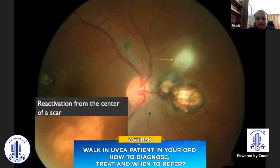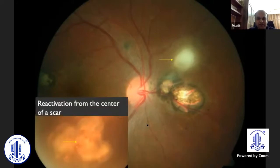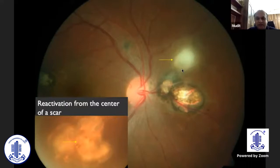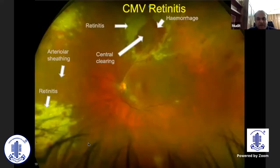One clue to remember is the pattern of reactivation. If reactivation is occurring from the center of a scar, you may be dealing with tuberculosis. Whereas if reactivation occurs from the edge of a scar, that is toxoplasma. Remember: toxoplasma lesions get reactivated mostly from the edge of a scar, as compared to TB, which may get reactivated from the center of a scar.